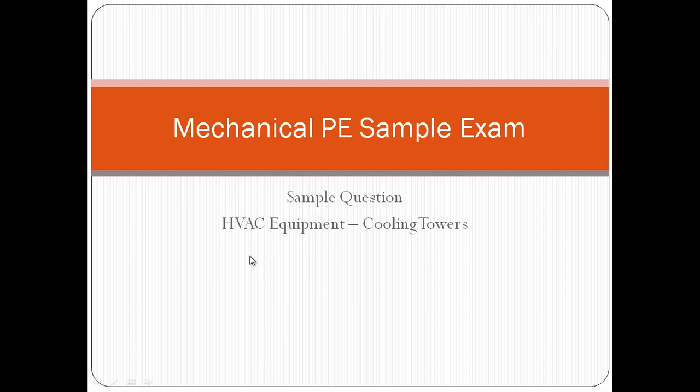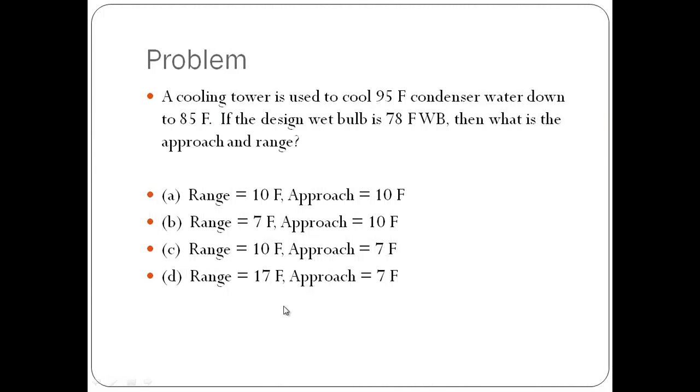This post walks you through a typical Mechanical PE exam question in the category of HVAC equipment, specifically on cooling towers. A cooling tower is used to cool 95 degrees Fahrenheit condenser water down to 85 degrees. The design wet bulb is 78 degrees Fahrenheit.